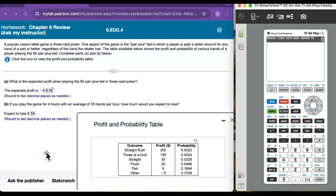In this problem, we're dealing with a casino table game called three-card poker. One aspect of the game is the pair plus bet, in which a player is paid a dollar amount for any hand of a pair or better, regardless of the hand the dealer has. The table that's shown here, which I've highlighted, shows the profit and probability of various hands of a player playing the five-dollar pair plus bet.